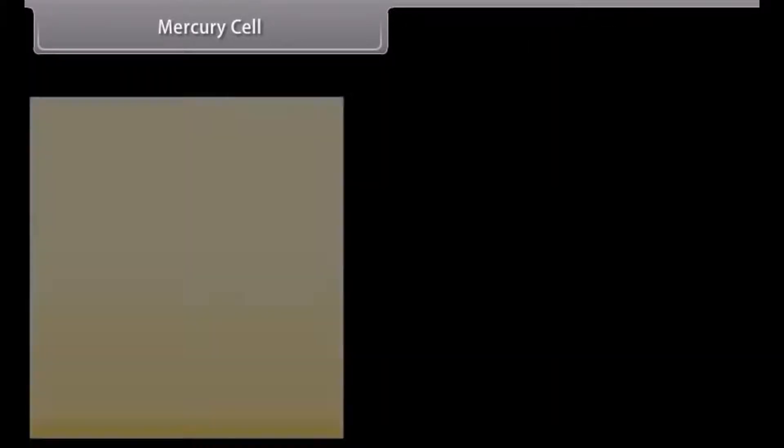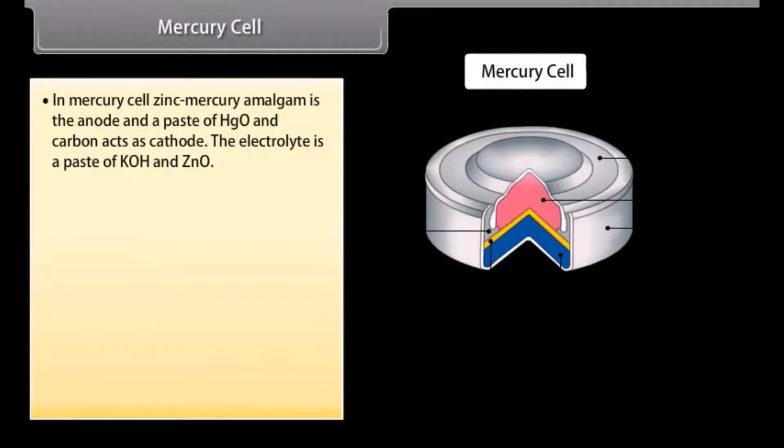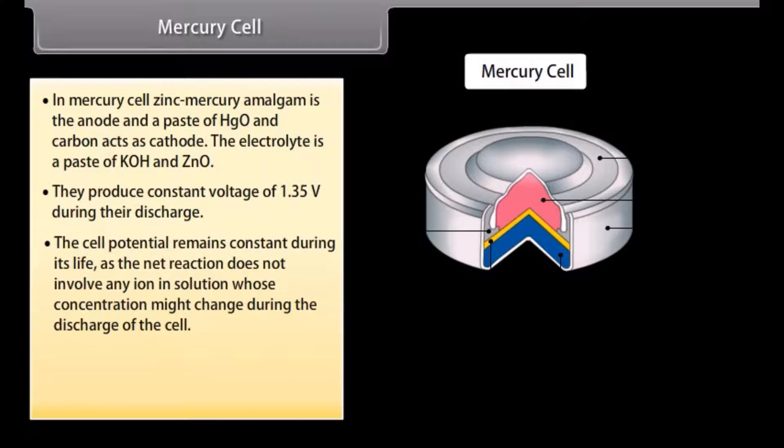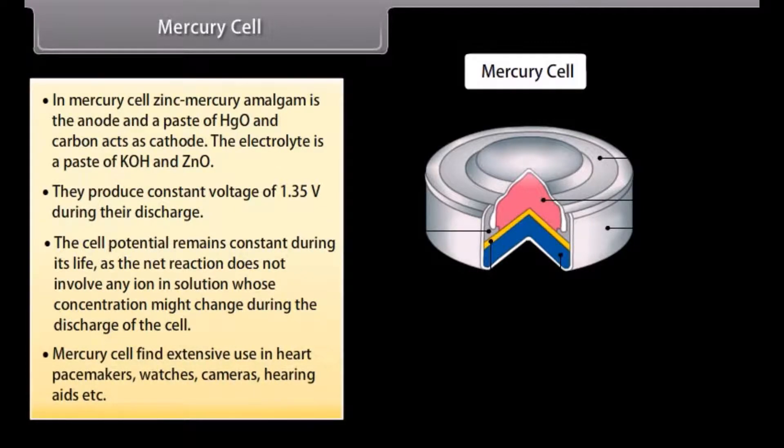Mercury cell. In mercury cell, zinc mercury amalgam is the anode and a paste of HgO and carbon acts as cathode. The electrolyte is a paste of KOH and ZnO. They produce constant voltage of 1.35 volt during their discharge. The cell potential remains constant during its life as the net reaction does not involve any ion in solution whose concentration might change during the discharge of the cell. Mercury cell finds extensive use in hard pacemakers, watches, cameras, hearing aids, etc.